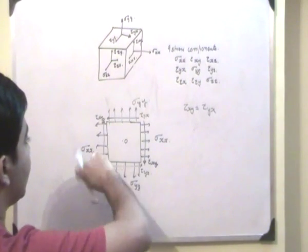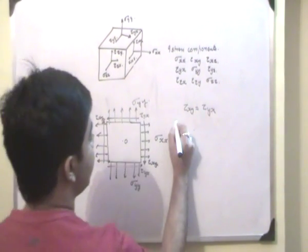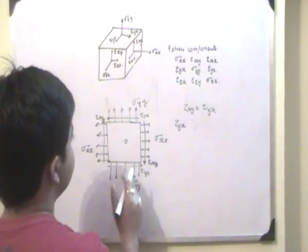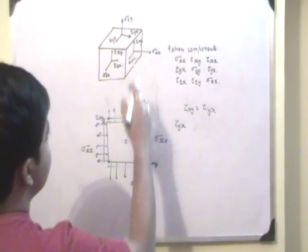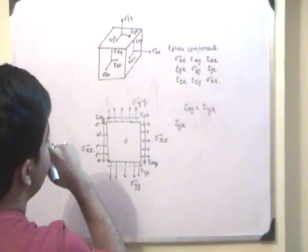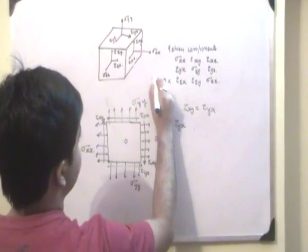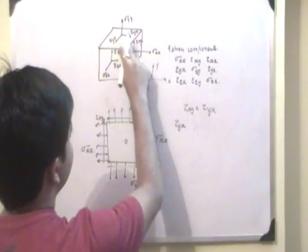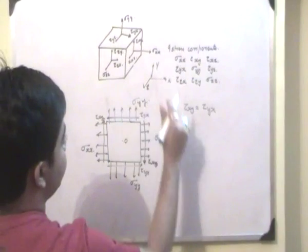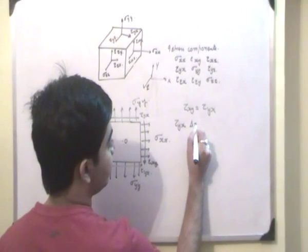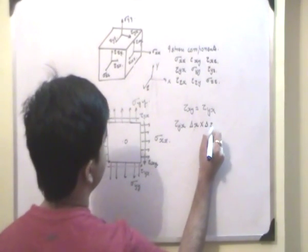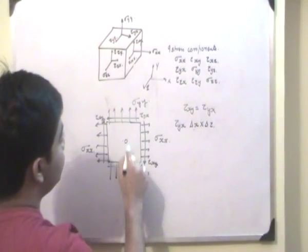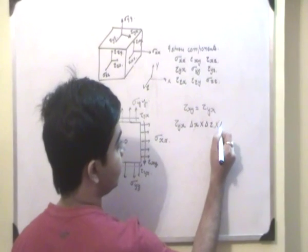Now, tau yx will create a couple in the anticlockwise direction. And it will be essentially tau yx, which is the shear stress, into the area over which it is acting. If this is x, if this is y and this is z, then tau yx will act over this area. So it is delta x into delta z, and it will be into delta y.